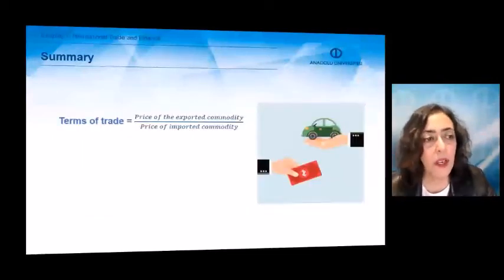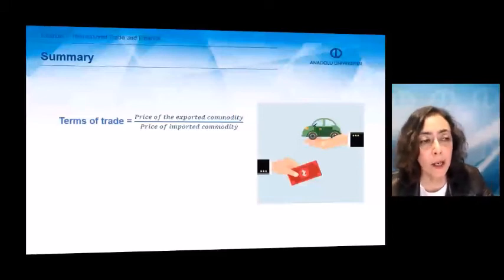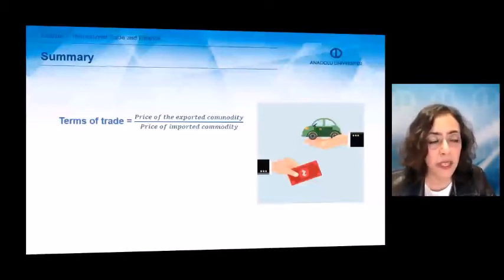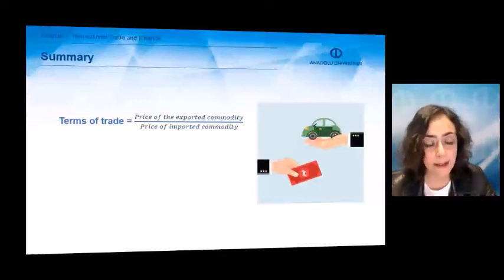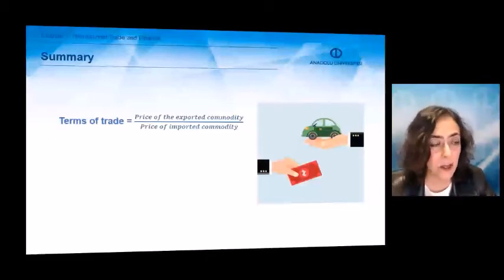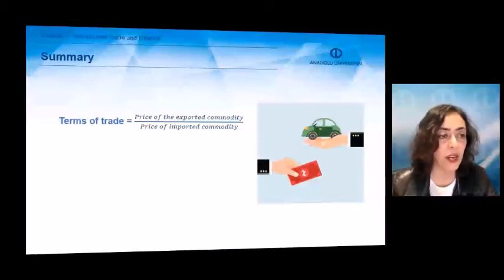When it comes to the gains of countries from international trade, we have a very important term called terms of trade. When a country's terms of trade is increasing, it means that country would gain more from trading. But if the terms of trade is deteriorating, then this country's gain from international trade is decreasing. To obtain the terms of trade, you see the formula: we divide the price of the exported commodity by the price of the imported commodity, and then we can find the terms of trade of a country.